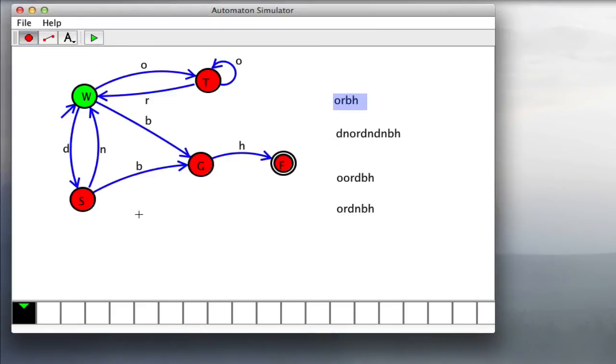The first one I'm going to do is O, R, B, H. So when I press O, you can see the green circle transition from the W state to the T state. When I press R, it goes back to W. Then I'll press B, and we see it go to the G state. And then I'll press H, and see it reach the F state where it is accepted.